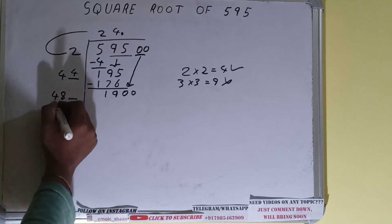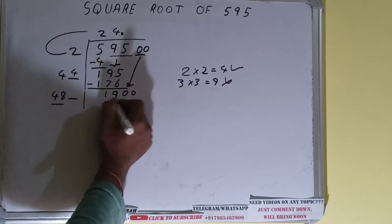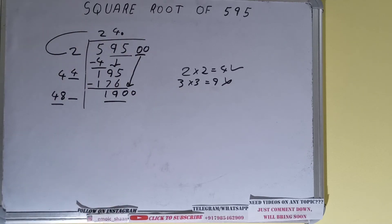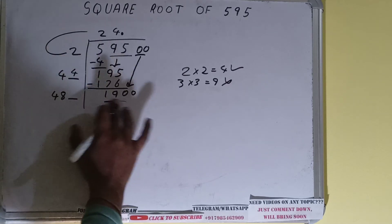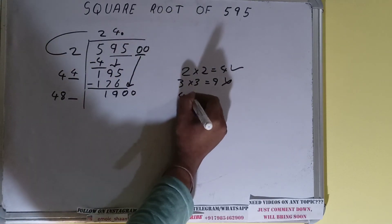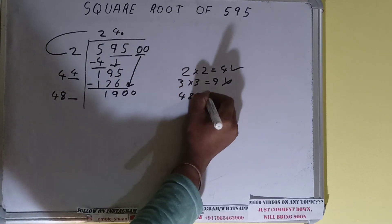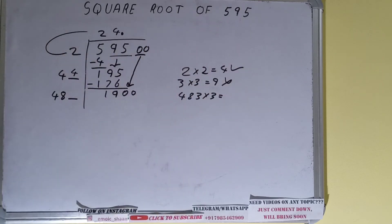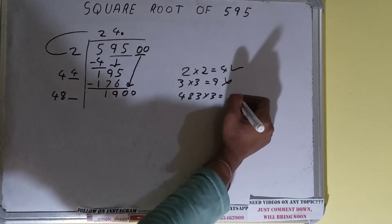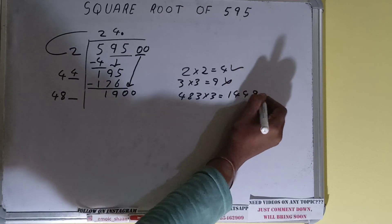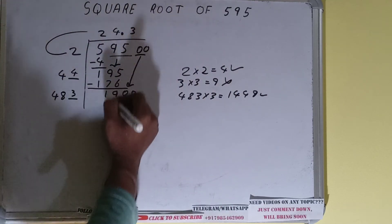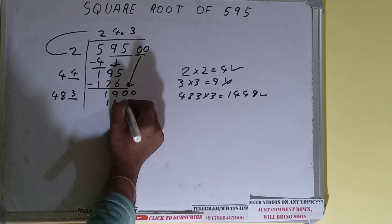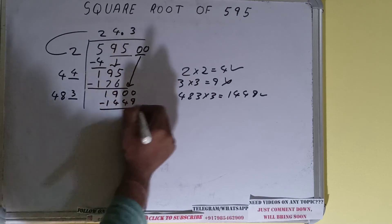Now we compare 48 with 190. 48 four times is 192, so we cannot try four — we have to try three times. 483 times 3 gives 1449, which is good to take. So three here and three here gives 1449, subtract it.